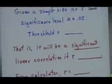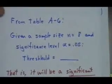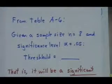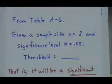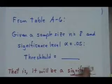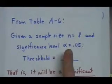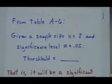Well, from table a-6, we have a sample size of eight crickets. So we're using n equals 8. And we're going to use a significance level of 0.05.